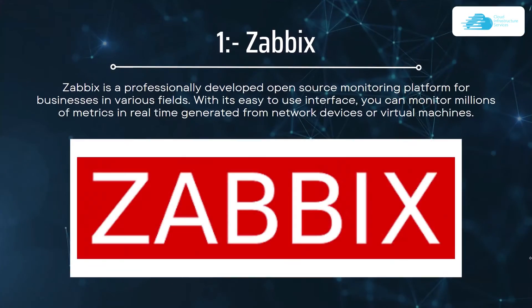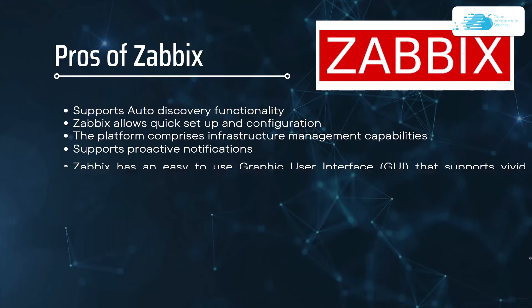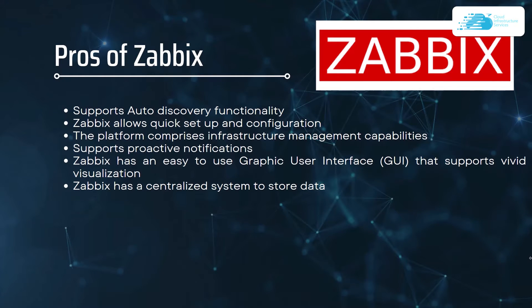Starting off at number one, we have Zabbix. Zabbix is a professionally developed open source monitoring platform for businesses in various fields. With its easy-to-use interface you can monitor millions of metrics in real time generated from network devices or virtual machines. Zabbix supports auto discovery functionality, allows quick setup and configuration, comprises infrastructure management capabilities, supports proactive notification, and has an easy-to-use graphical user interface with vivid visualizations.